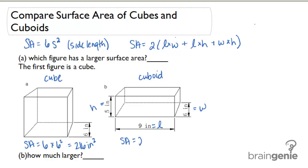We would get surface area equals 2 times length times width would be 9 times 6 plus length times height would be 9 times 5 plus width times height would be 6 times 5. And if I do out that multiplication and addition I would find that the surface area is 258 inches squared.